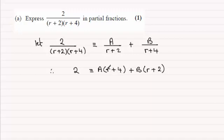That's when r equals -4. So when r equals -4, what we've got is 2 here and it equals—this will go to 0—and then you've got -4+2, that's -2b. And from this it follows that b clearly is equal to -1.